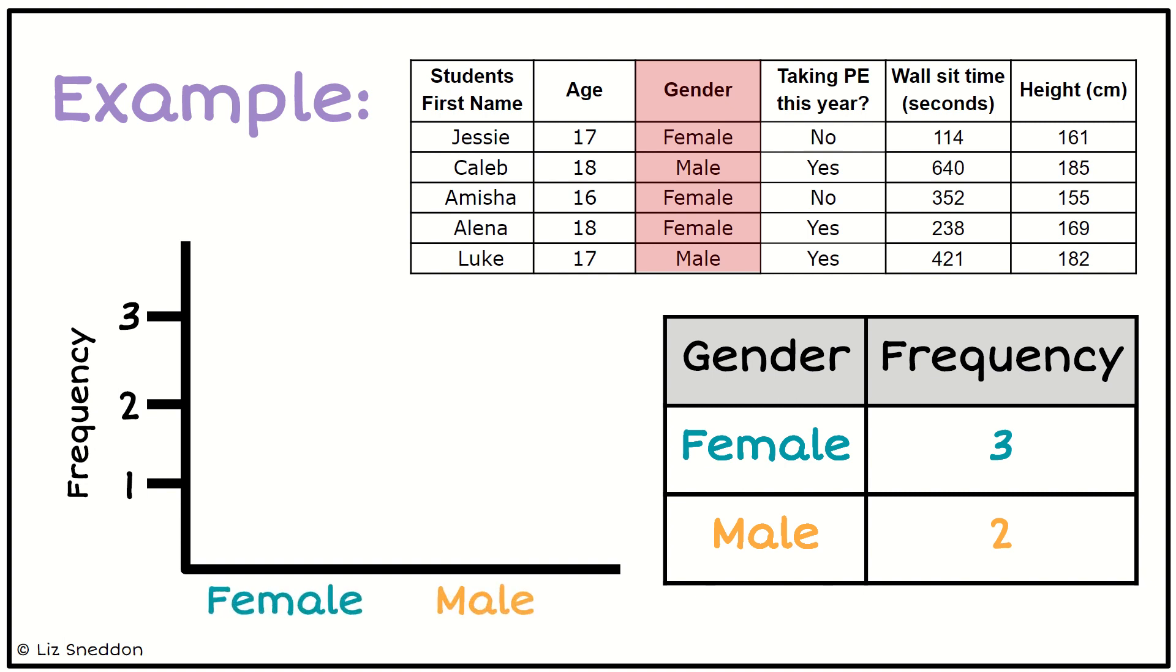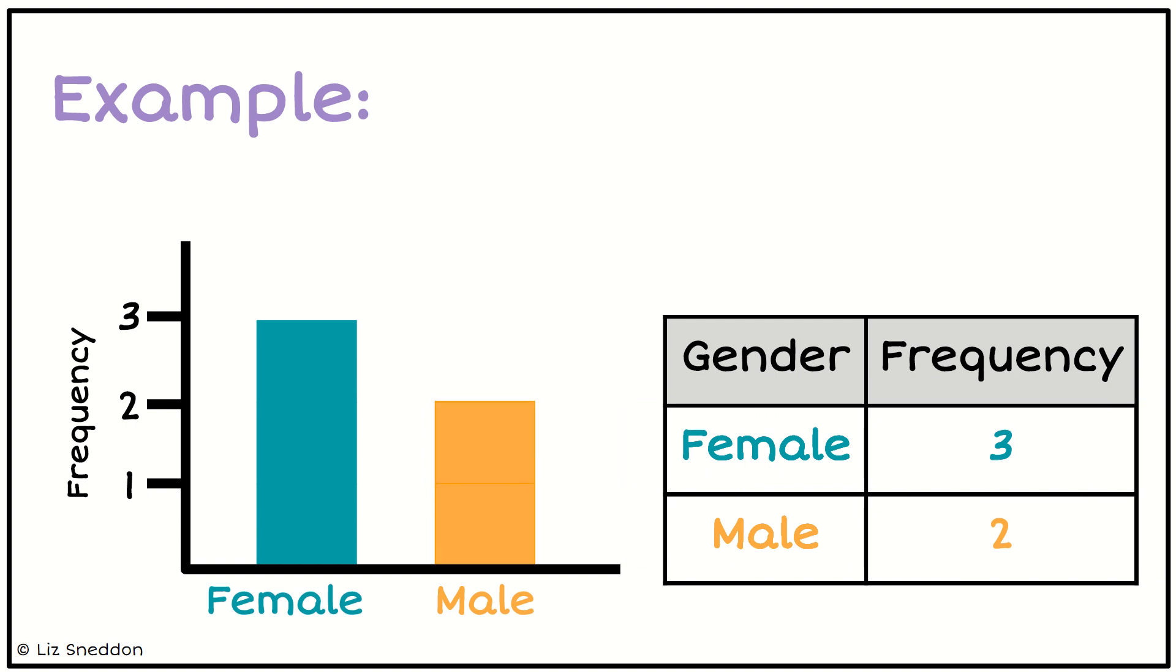Then on the bottom axis, I'm going to put my males and my females. So let's start with the females. We've got a frequency of 3, so I want to put in 1, 2, 3. So that's going to go up to 3. So then my males, I've got 2. So again, 1, 2. So I'm going to color in 2 bars there.